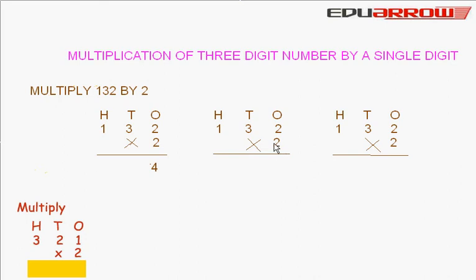Now, we multiply the tens: 2 times 3 tens. We write here 6, 4. Now, we multiply the hundreds: 2 times 1 hundred. Here, we write 2, 6, 4.